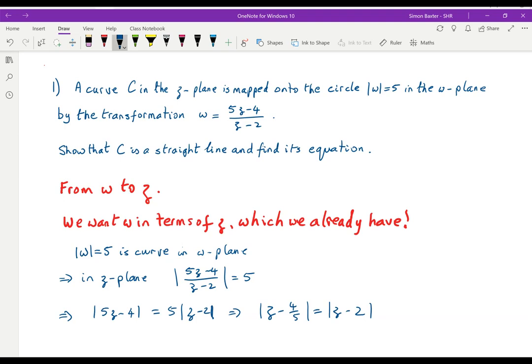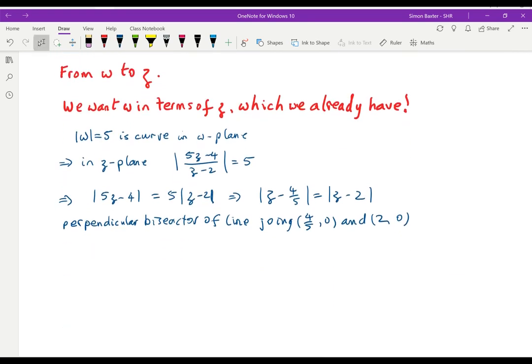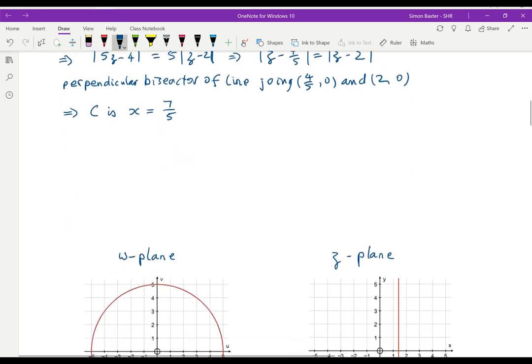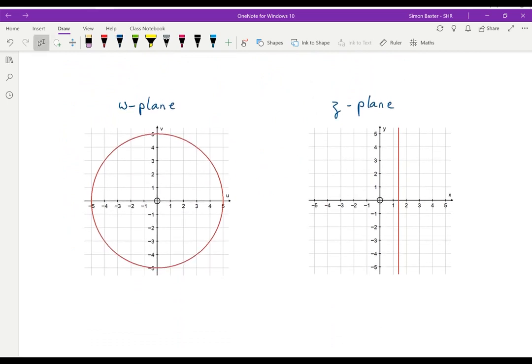This is now the easy one. This is the perpendicular bisector of the line joining 4 over 5, 0 and 2, 0. The midpoint of 4 fifths and 2 is 7 over 5 and so this is the line x equals 7 over 5. We are working in the Z plane so we must have the line x equals 7 over 5, not u equals 7 over 5. So we start with a circle mod W equals 5 in the W plane and we end up with a straight line x equals 7 over 5 in the Z plane.